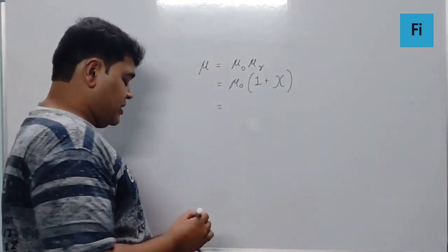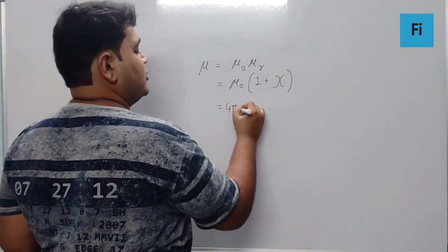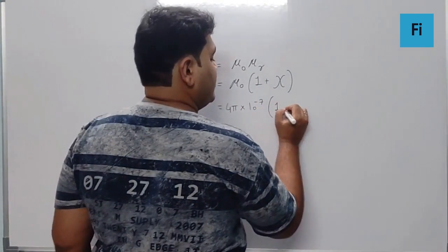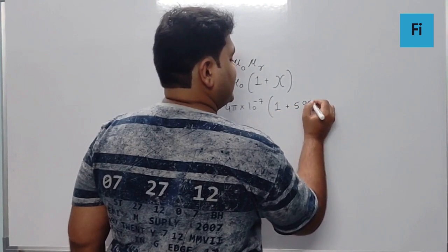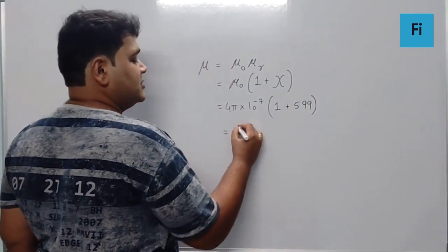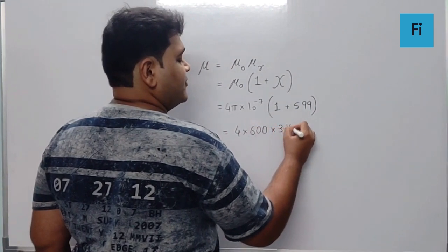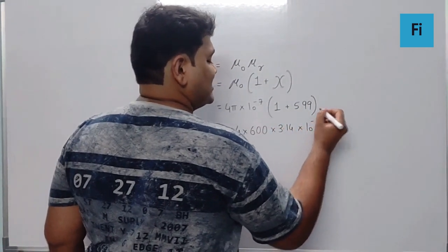That means if I write μ₀ as 4π × 10⁻⁷ as given in the question, and this would be 1 plus 599, this becomes 600. So 4 × 600 × 3.14 × 10⁻⁷.